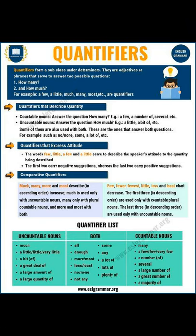Quantifiers in English: a lot of, a few, a little, a bit. What are quantifiers? We use quantifiers when we want to give information about the number of something — how much or how many. Quantifiers form a subcategory under determiners; they are adjectives or phrases that answer two possible questions: how many and how much. For example: a few, a little, much, many, most, some, any, enough, etc.